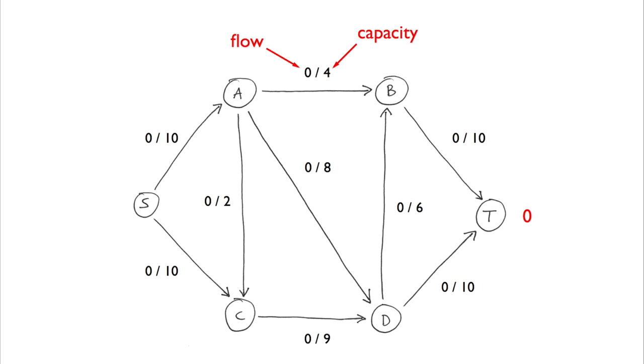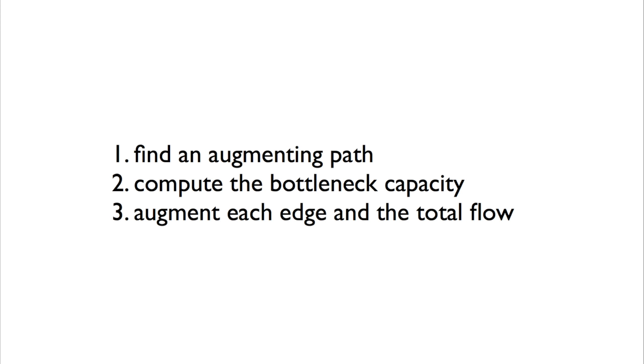At each iteration, we'll first find a path, then compute the bottleneck capacity, which is simply the edge in the path with the smallest capacity, and finally we'll augment our path. We'll repeat these three steps until we can't find an augmenting path.